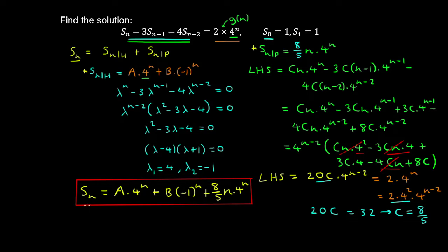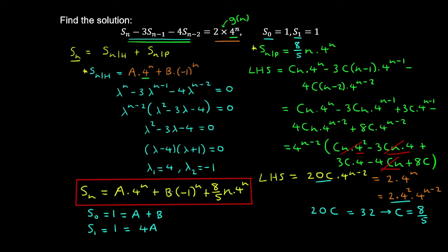Applying the first initial condition s(0) = 1, we get a·4⁰ + b·(-1)⁰ + (8/5)·0·4⁰ = 1, which gives a + b = 1. The second initial condition gives 4a minus b plus (8/5)·1·4¹ = 4a minus b plus 32/5.